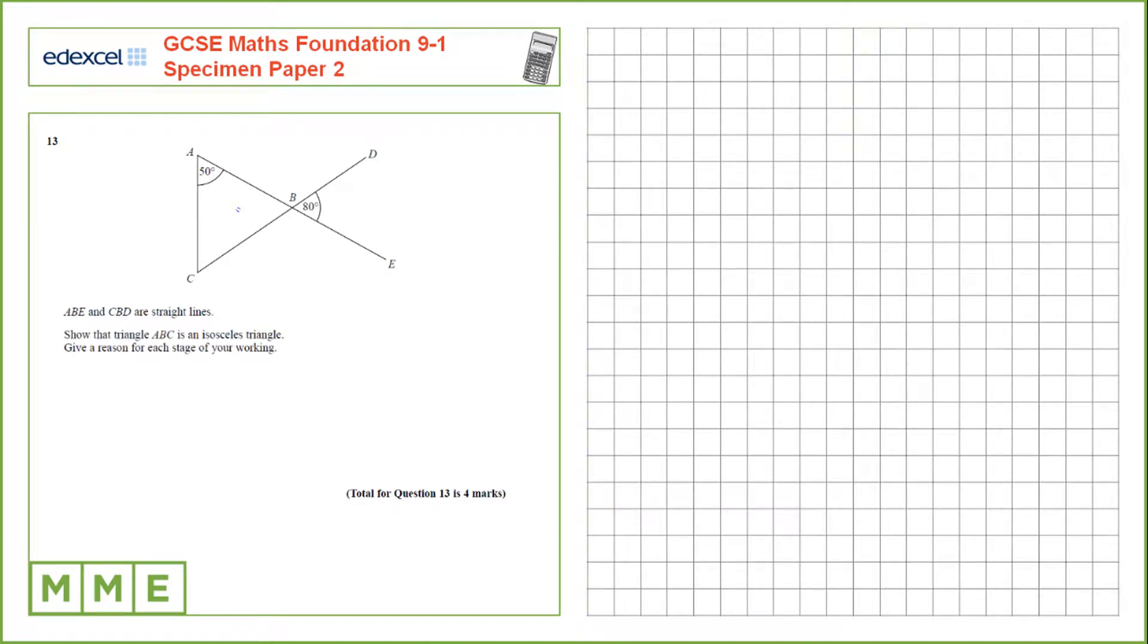Question 13. ABE and CBD are straight lines, and we need to show that ABC is an isosceles triangle. We could show that by showing that two of the angles are the same.